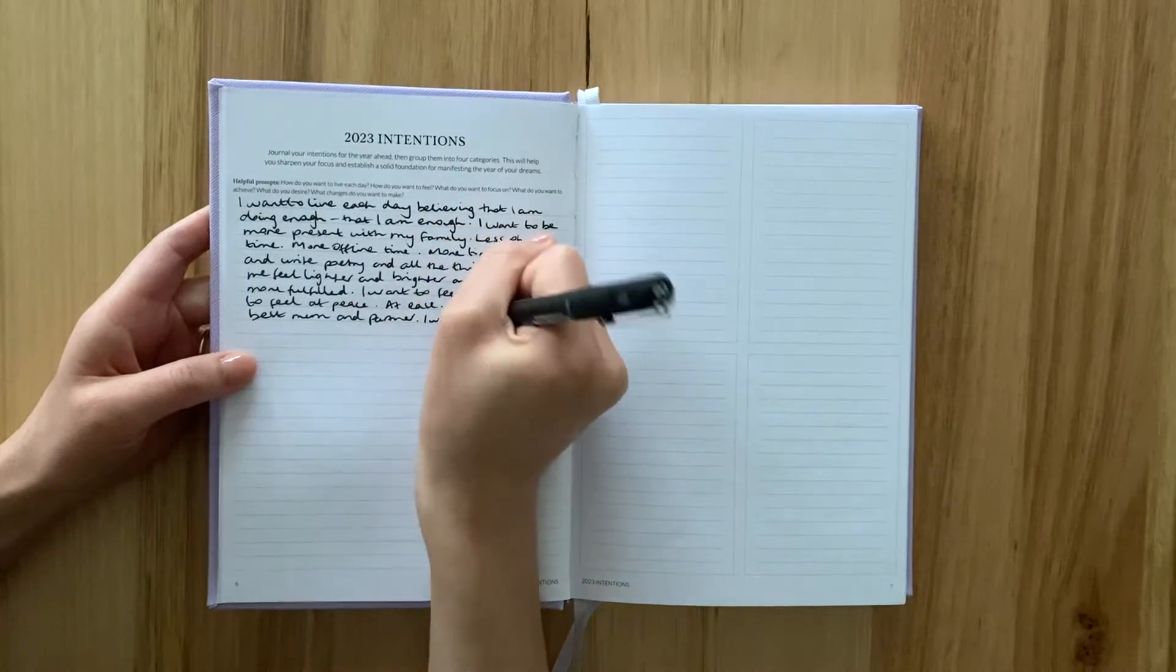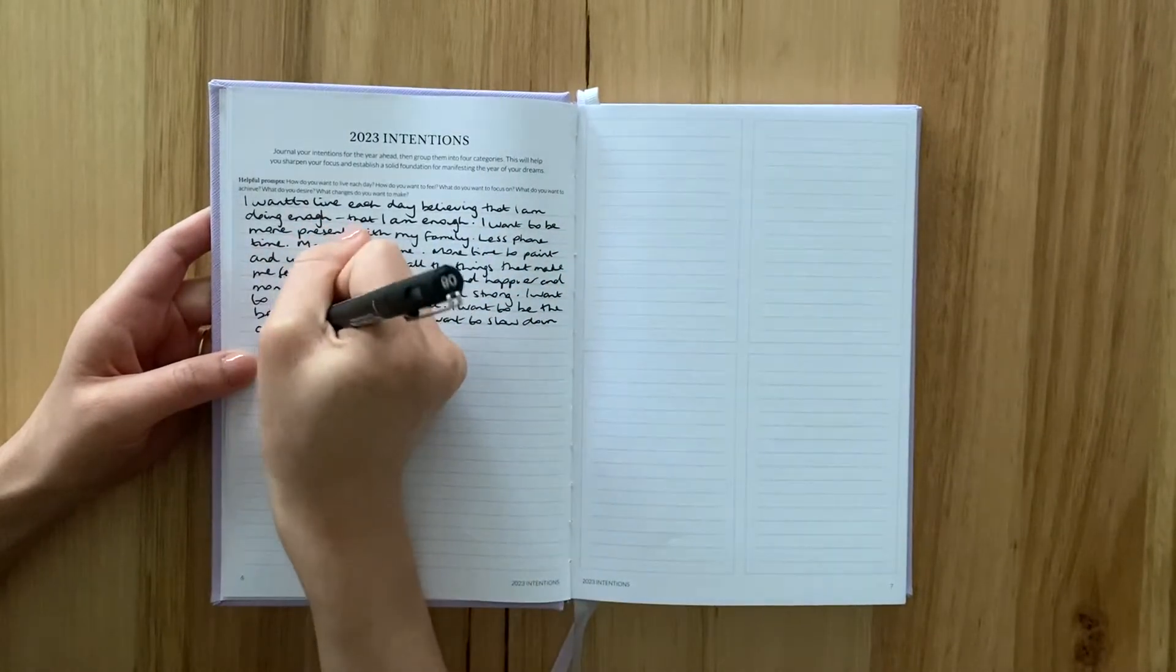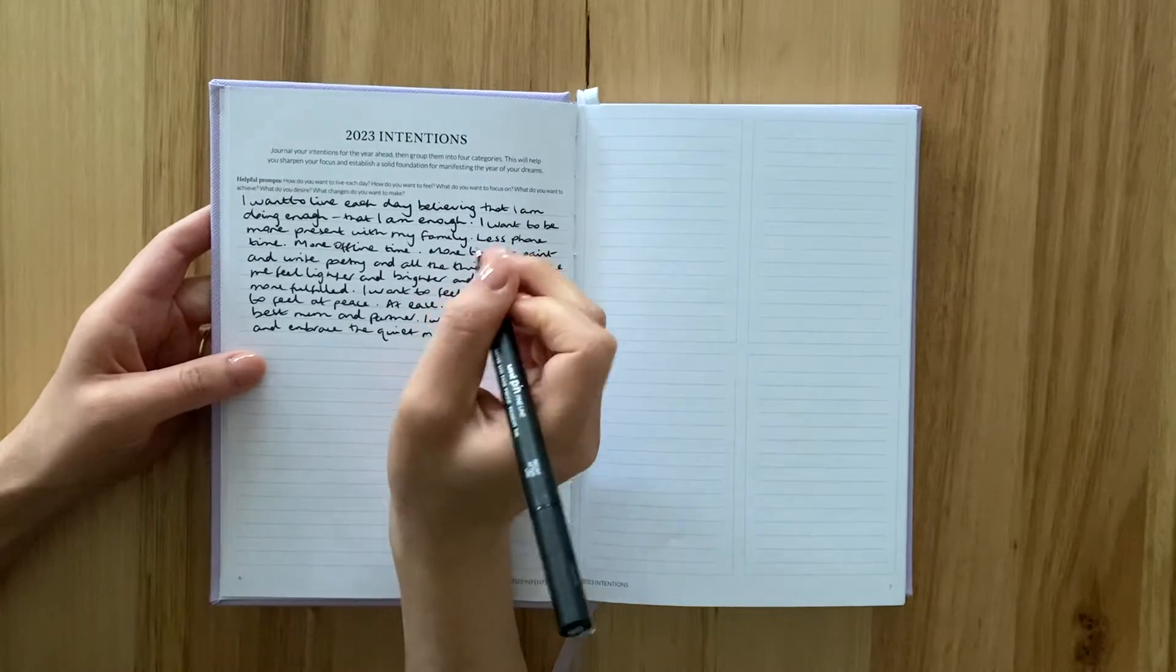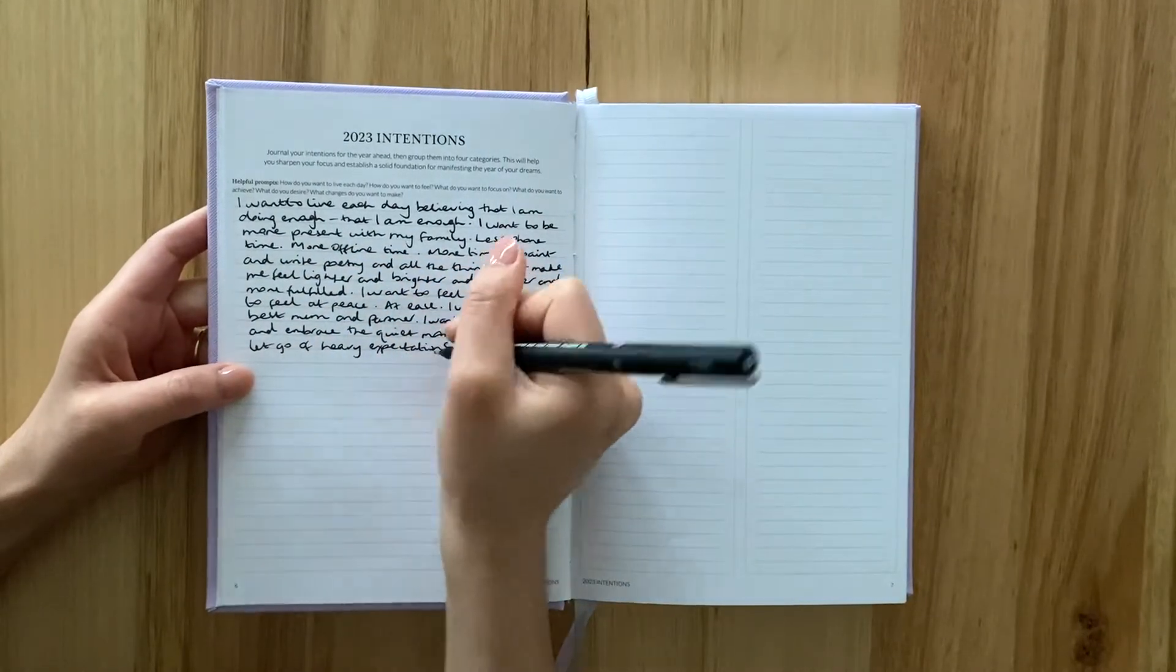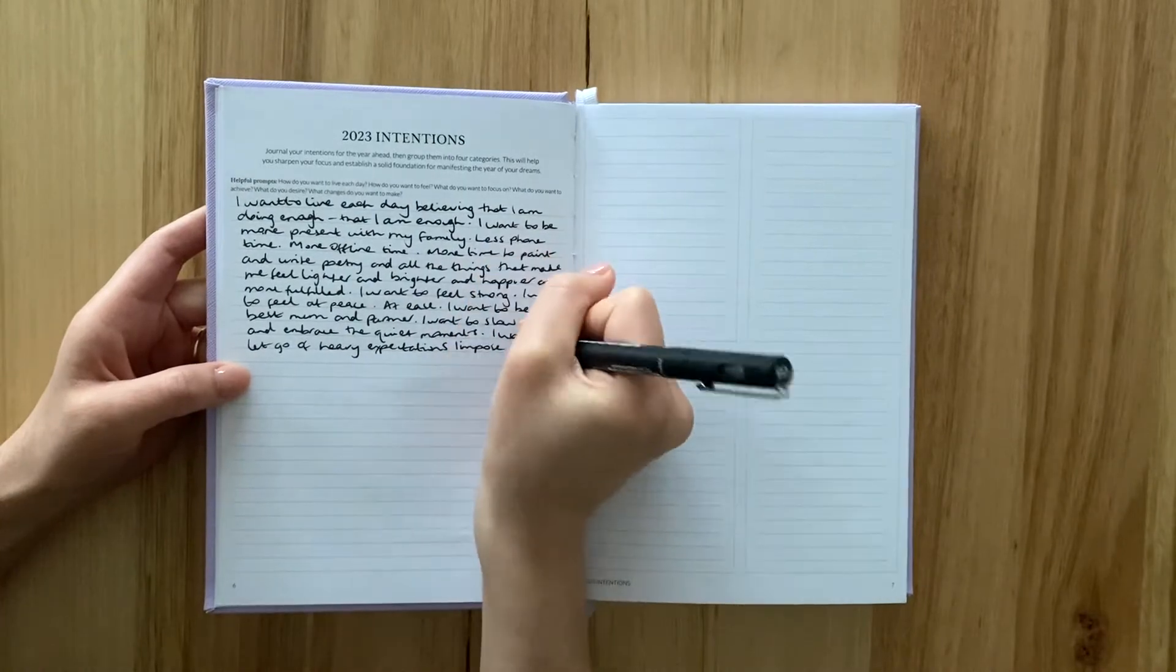You might use the line space on the left to journal your intentions, or you might use it to brain dump anything that comes to mind. The four boxes on the right are for refining and categorizing your list of intentions.